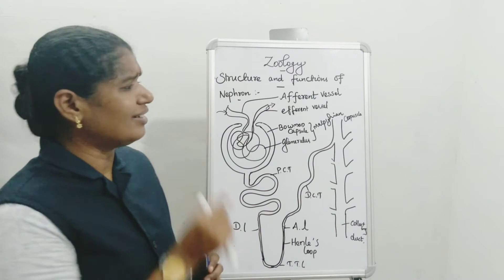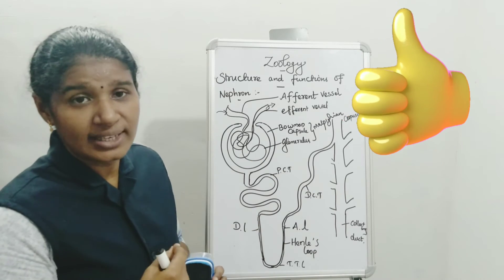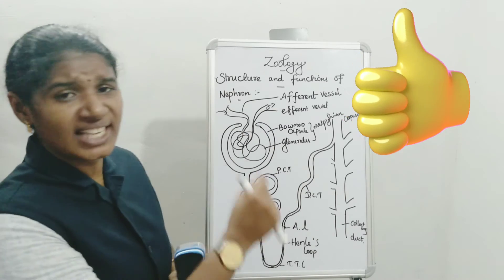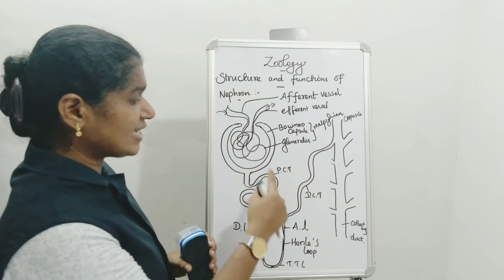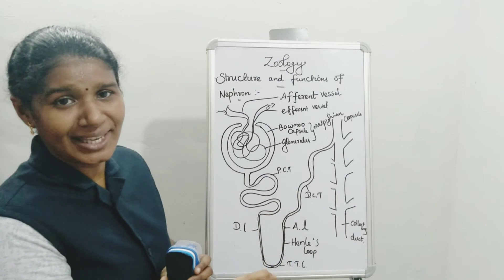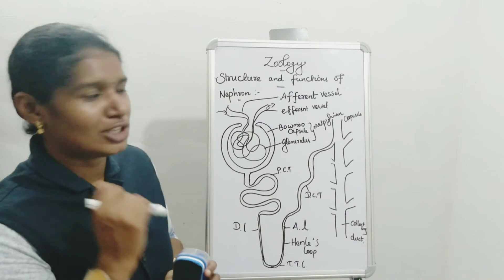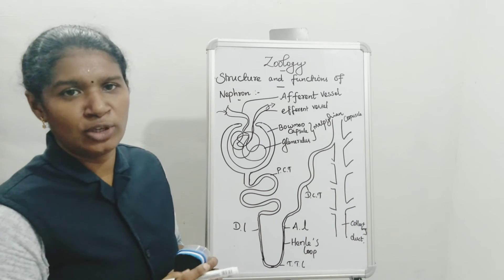Some ask the question: nephron, is it a cell or tissue? We know that a group of cells is called a tissue. This nephron consists of a number of cells. So it is called a tissue. Nephron is a tissue. And it opens into collecting duct.